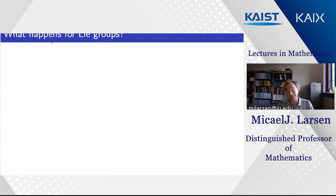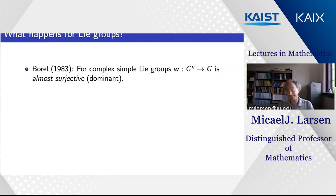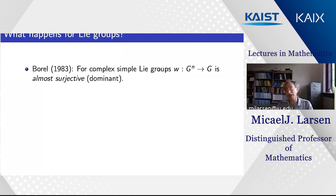Before talking about finite groups, I want to discuss something that sounds harder but is actually easier: what happens for Lie groups. There is a big theorem due to Borel in 1983 which says: if you have a complex simple Lie group and you think about the map from Gⁿ to G, then it is almost surjective — technically the term is 'dominant.'